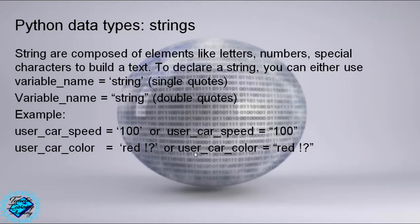Example: user_car_speed = '100' between two single quotes, or user_car_color = 'red' between two single quotes or two double quotes.